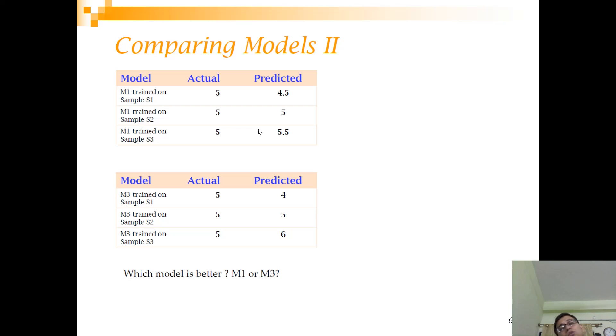Here are two further sets M1 and M3 similarly being trained on S1, S2 and S3. So here if you see the actual value is 4.5, 5 and 5.5 for M1 and 4, 5 and 6 for M3. Now tell me which model is better, is it M1 or is it M3? So again most of you will tell that model M1 is better because it has less variation from the actual value.